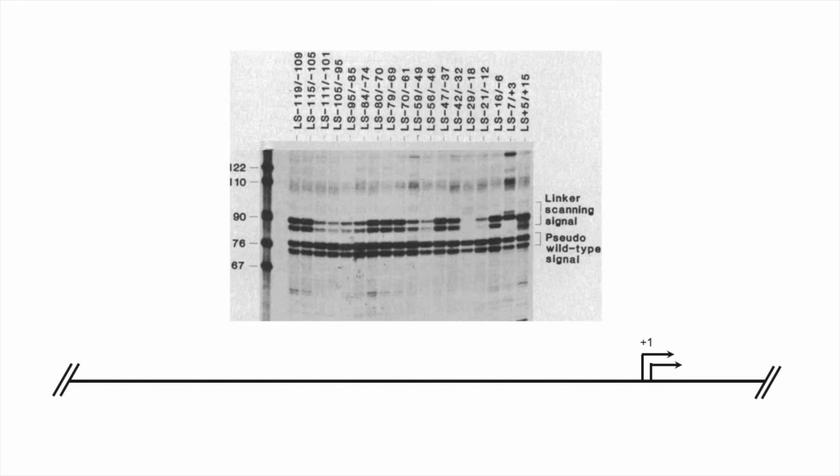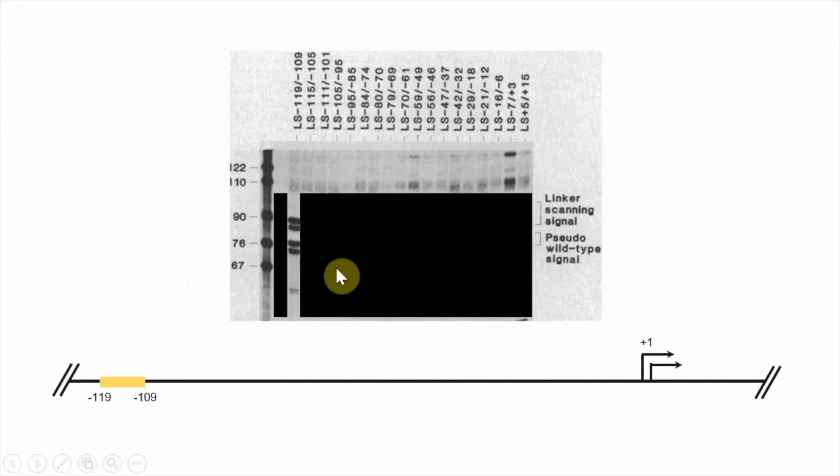The pseudo-wild type signals allow us to control for that natural variation and actually track if there's a difference due to the insertion of the linker sequence within the promoter. So without further ado, we're going to take this lane by lane. Starting with the leftmost lane, we don't see a difference in the strength of the linker scanning signal and the pseudo-wild type signal. So there's no change in transcription between minus 119 and minus 109. An implication is that there is probably not a promoter element in this region important for activated transcription. Moving along from minus 115 to minus 105, we also see no change.